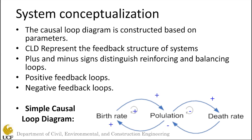Feedback loops are the most important characteristic of any system dynamics model, as these connectors determine how the results or output of a sector within the system should be used as an input for another sector. These feedback loops can come with a positive or negative sign depending on their overall effect. A positive sign means it's a reinforcing loop, meaning the related parameters have the same overall increasing or decreasing trend.